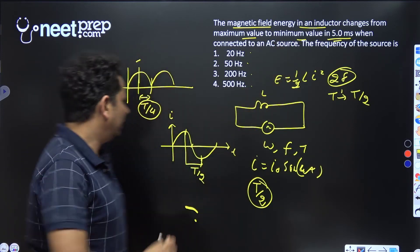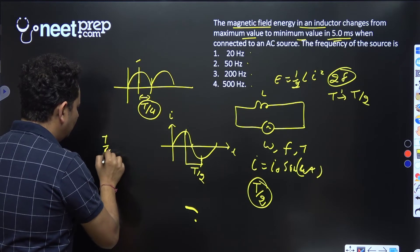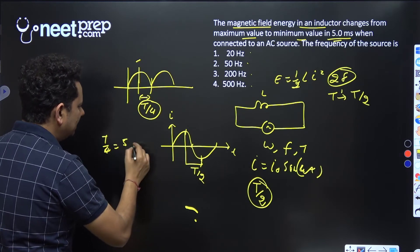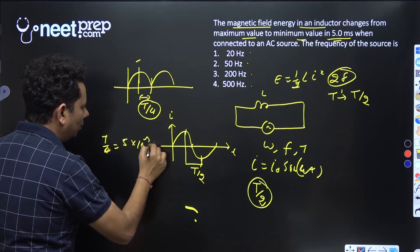So T/4 equals 5 milliseconds, that is equal to 5 × 10⁻³ seconds.